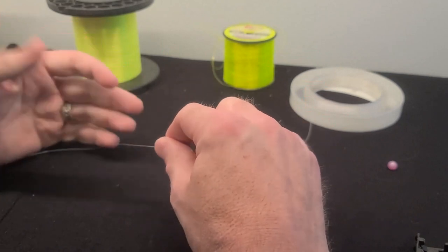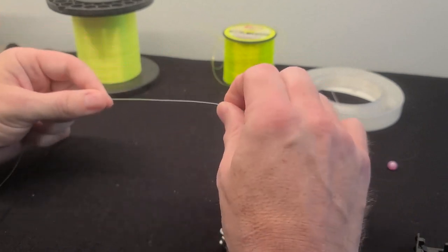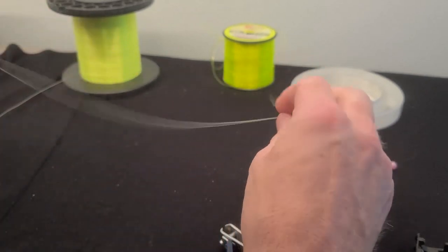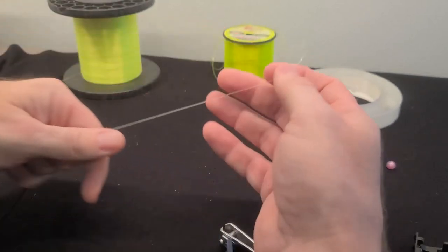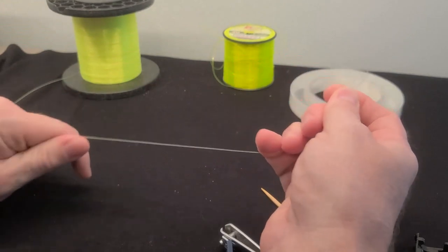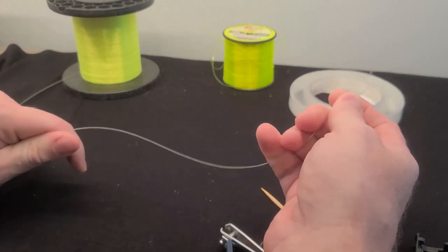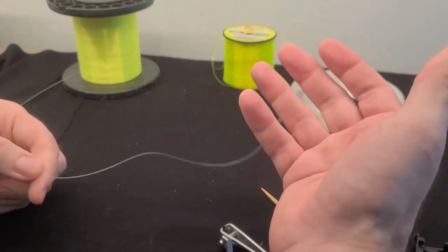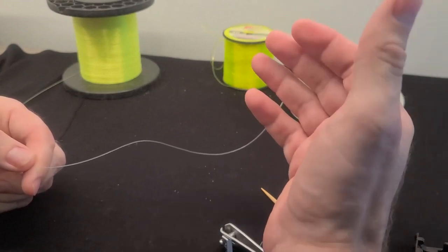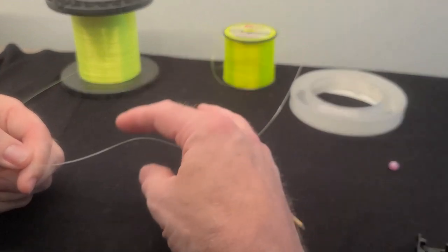The problem with fluorocarbon: you have standard monofilament line like we showed, and you want shock leader to stretch. The fluorocarbon line, because of the way it's made, it's very brittle, so it has almost zero stretch. It's kind of like a braid - it's not gonna stretch at all.